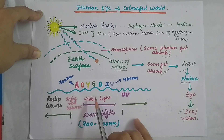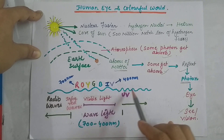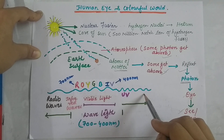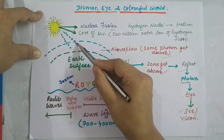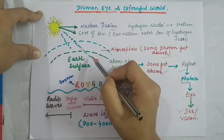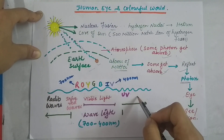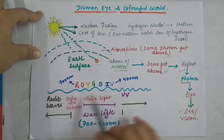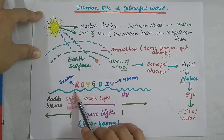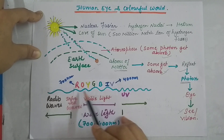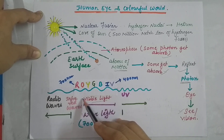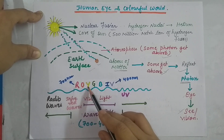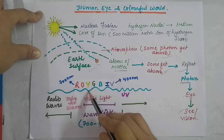We already know that light is in the form of electromagnetic radiation — electromagnetic waves. This photon is coming towards the earth's surface in the form of electromagnetic waves. We also know that only particular wavelengths of light are visible to us — this is VIBGYOR: Violet, Indigo, Blue, Green, Yellow, Orange, Red. They are all written in color.